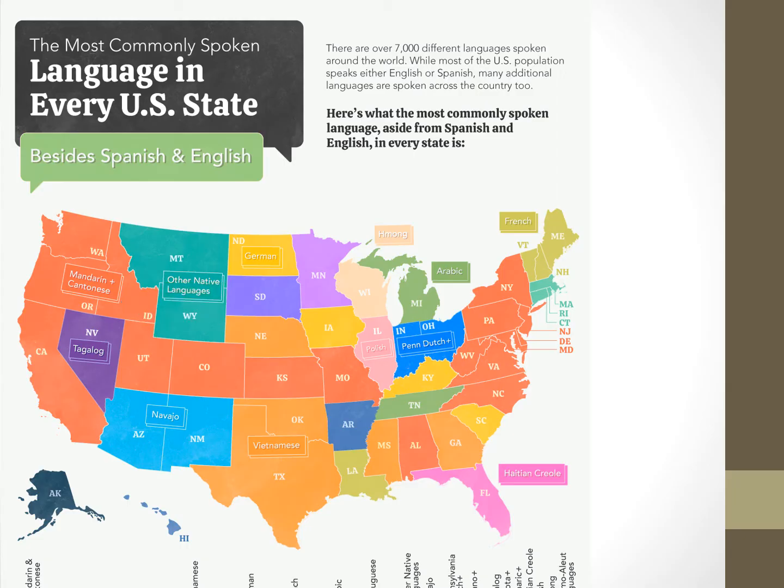With migrations from Europe, small ethnic enclaves developed, like Little Italy on the East Coast and in major urban areas. And with these migrants came food, like pizza, which came to the United States in the late 19th and early 20th centuries.